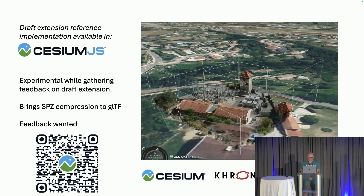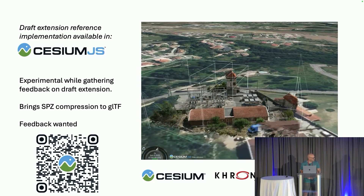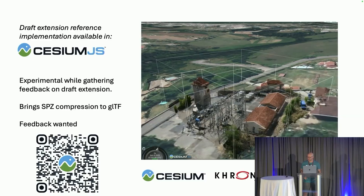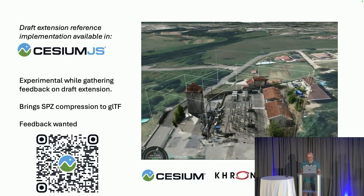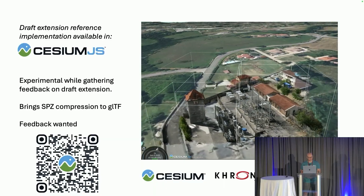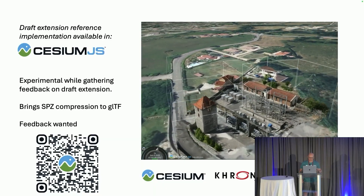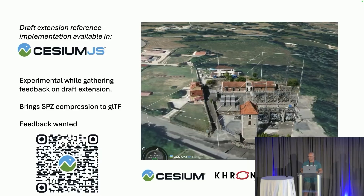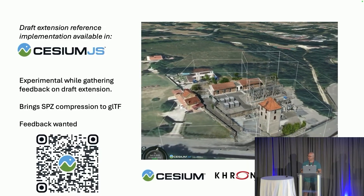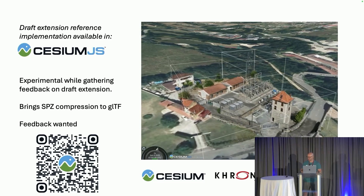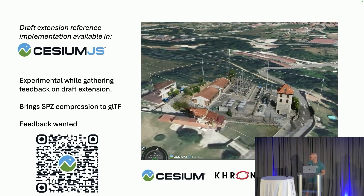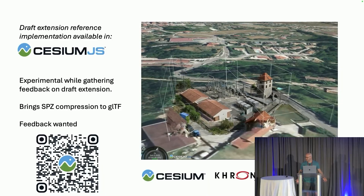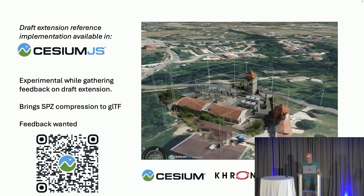Our current implementation is in CesiumJS — it's very experimental, but it's out there and you can try it. There are some Sandcastle demos, so even if you don't have your own data, you can still see something and try it out. In this substation view, you can see the bounding boxes — there are actually tiles there. We're streaming multiple tiles and rendering them together, and one of the challenges there is sorting and making sure everything is correct. Sorting splats is a big challenge on the web. This is a WebGL2 implementation, but again it's experimental and we want your feedback on what you'd want to see in the future.